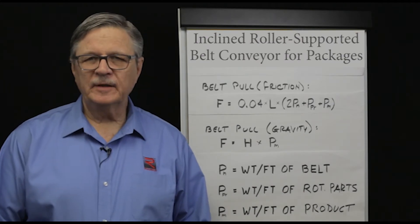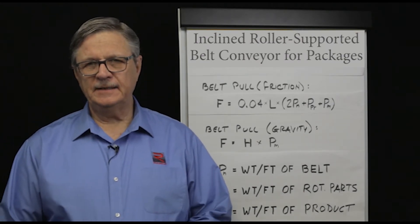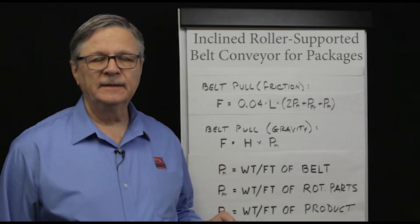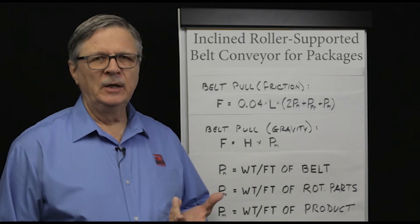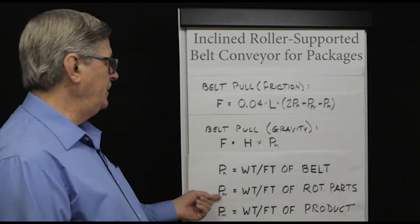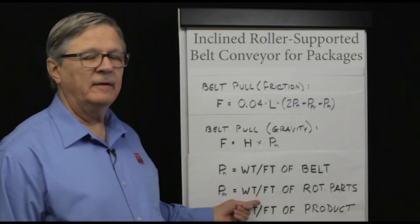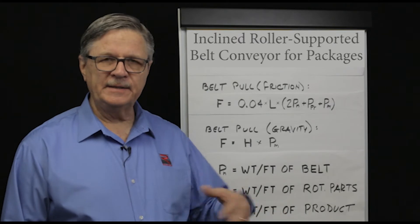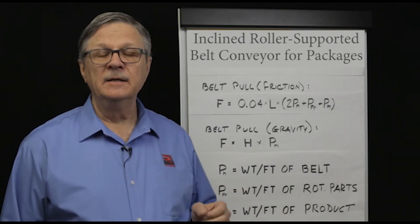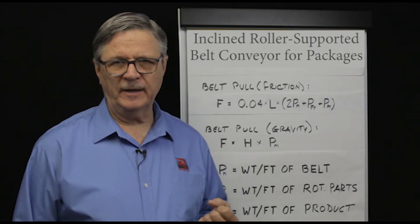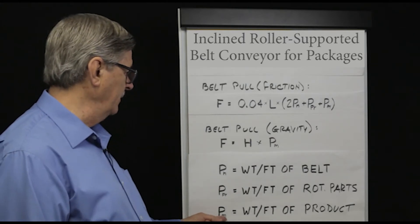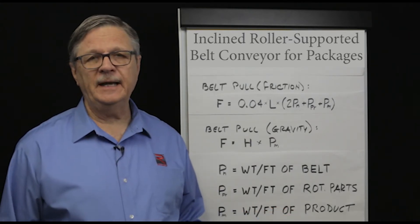Here are definitions for the parameters used in these equations. PN refers to the weight per foot of the belt; if the brand of the belt is not known, we like to use five pounds per foot of belt length. PPR refers to the weight per foot of the rotating parts or rolling stock — once again, if we don't know the brand of the roller, five pounds per foot is a good ballpark number. PM refers to the weight per foot of the product to be handled.